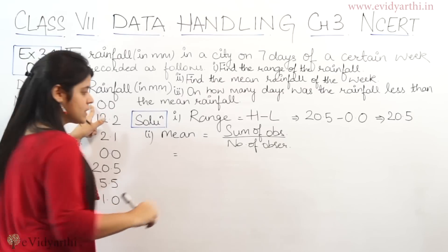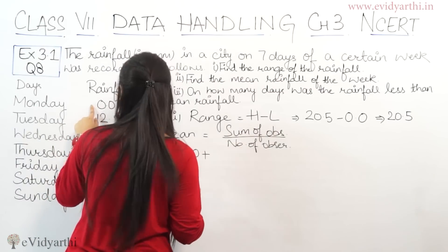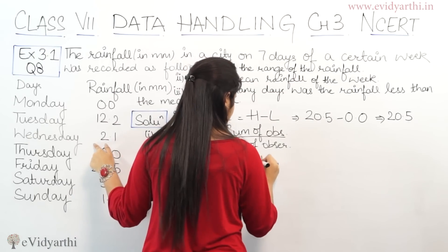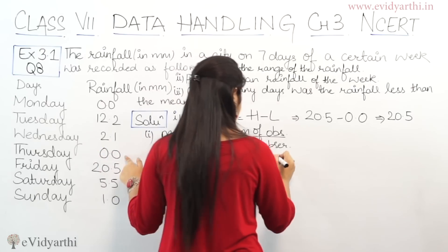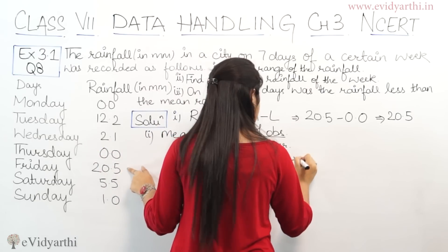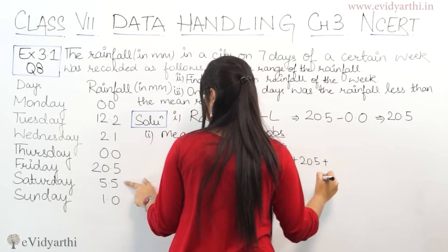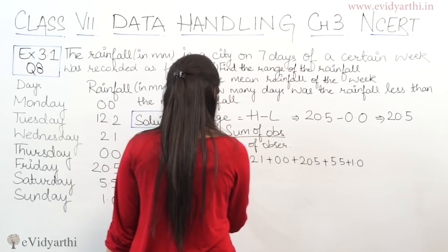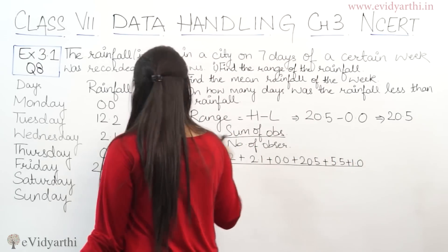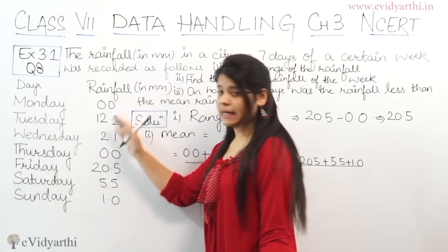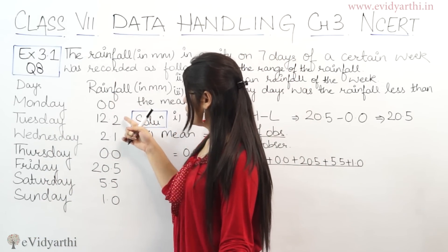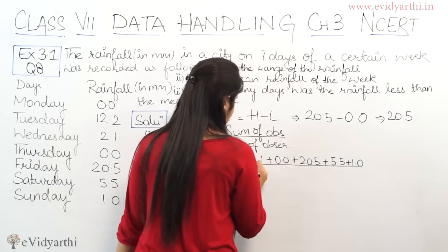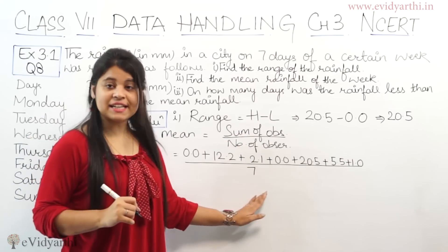Let's start. First we have 0.0, so: 0.0 plus 12.2 plus 2.1 plus 0.0 plus 20.5 plus 5.5 plus 1.0. We will find the sum of all these upon the number of observations. Counting the values: 1, 2, 3, 4, 5, 6, 7 — the number of observations is 7.